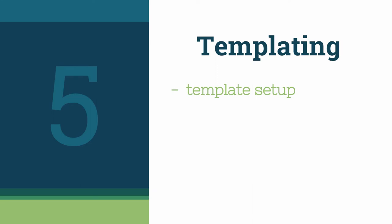Welcome back. In this video, we'll discuss templating options available to us in Express.js. First, we'll look at how to set up our template framework using the engine and set methods. We'll see how to set directory locations for reading the view files and other static content. Next, we'll take a look at a few of the more popular options such as Jade, EJS, SWIG, and Handlebars. Finally, we'll see what's involved in setting up a project without templating for use with frameworks like Angular and React.